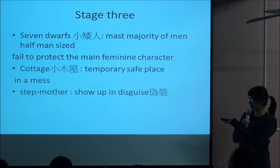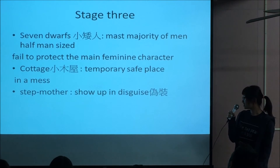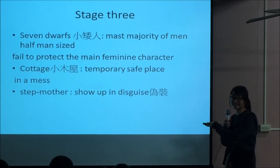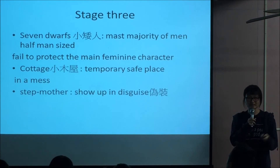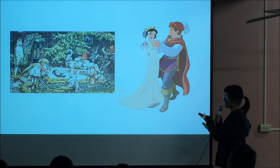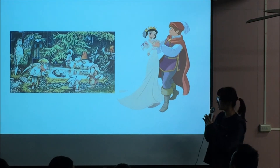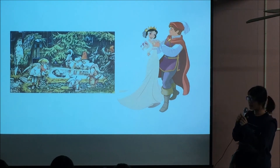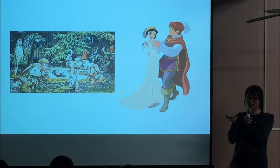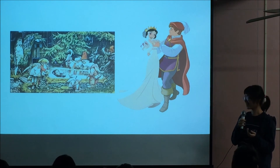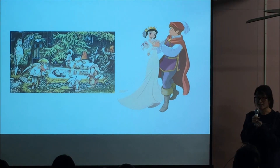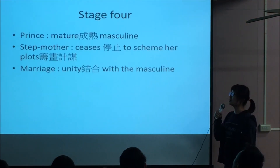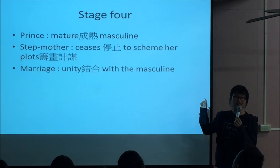The step-mother showed up in disguise, which means the person did not recognize the negative part in her psyche. The seven dwarves find that Snow White is dead. Then the prince comes and kisses her, and she comes back to life. They get married. The prince represents the mature cultural masculine in this story.